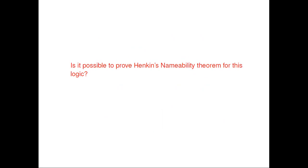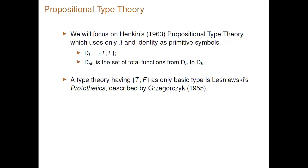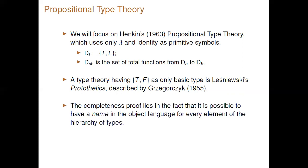Let us start by briefly explaining what is this propositional type theory proposed by Hankins. The idea is that this is a type theory where the only basic type is the set of truth values, and the more complex types are just sets of total functions from DA to DB, where A and B are arbitrary types. This type theory was already presented by Lesbinsky and exposed in a paper by Gregorchik. Hankins arrived at this system independently, and what is most important is that the completeness proof lies in the fact that it is possible to have a name in the object language for every element of the hierarchy of types.